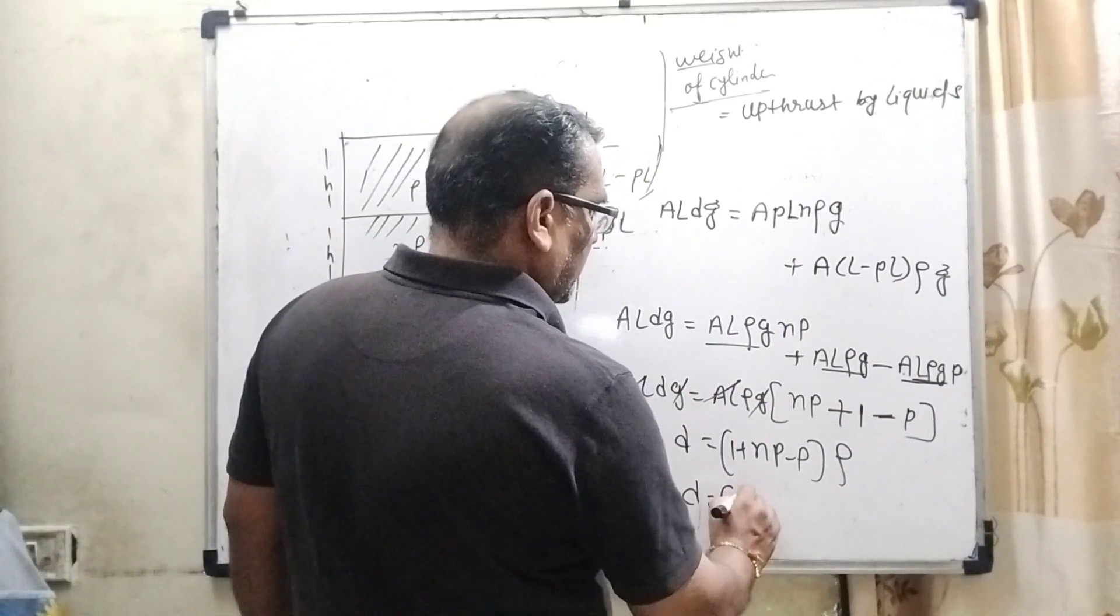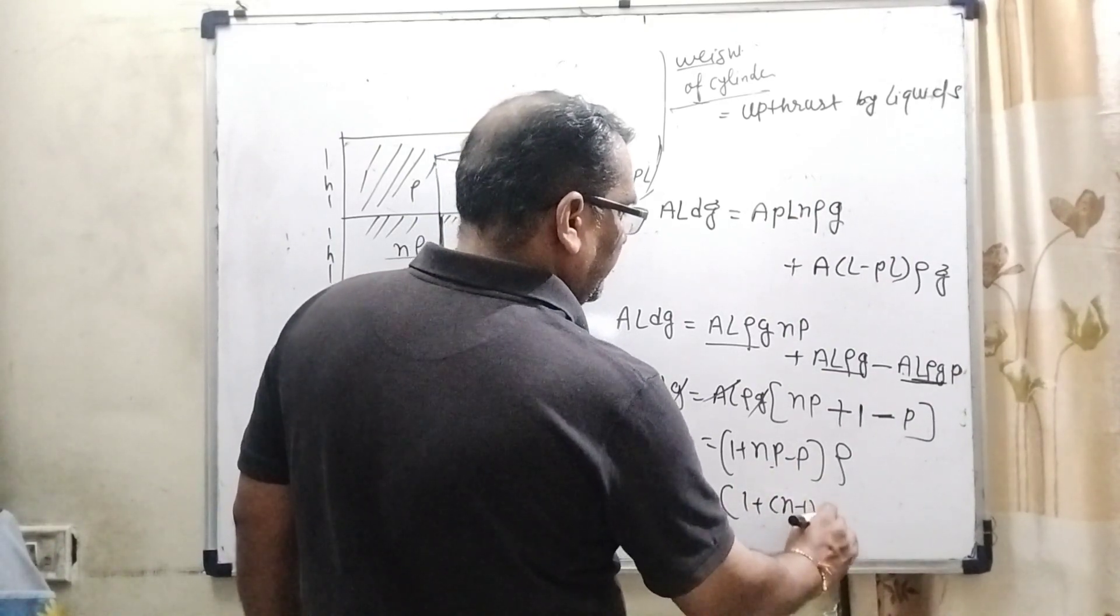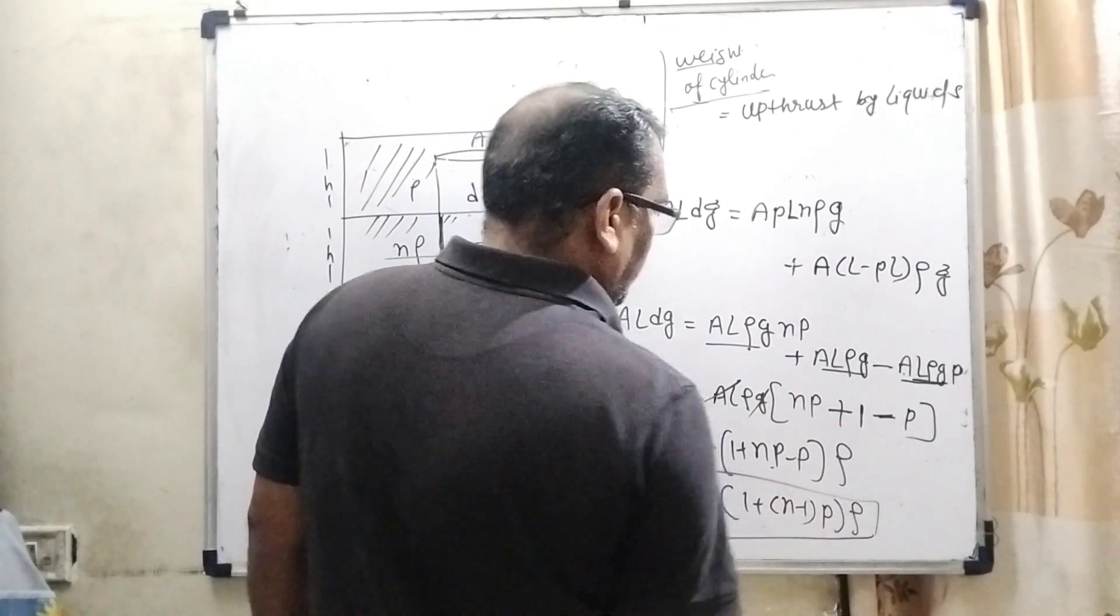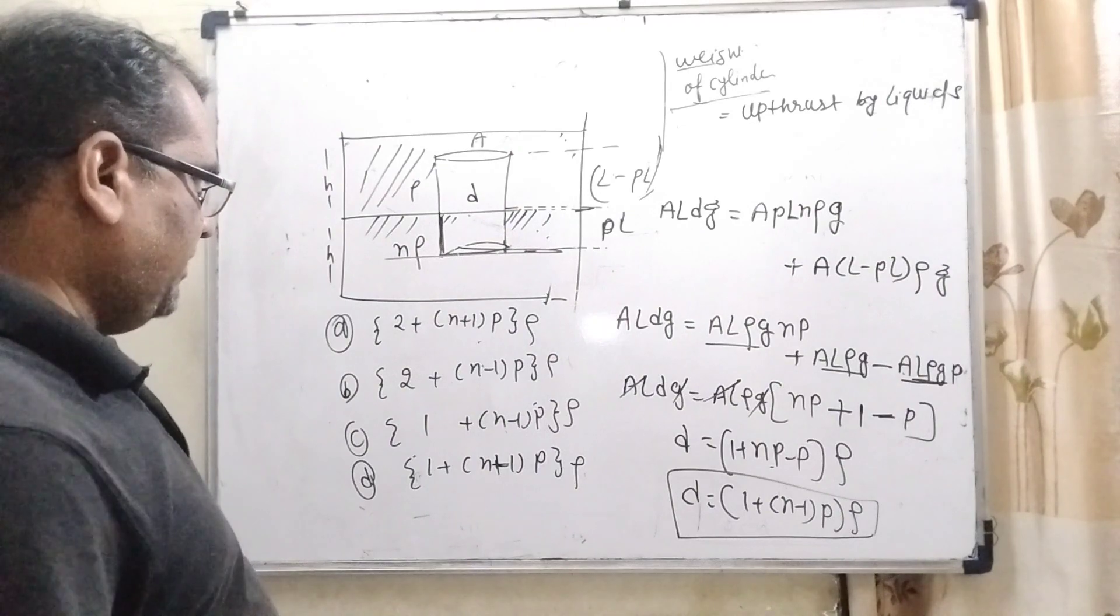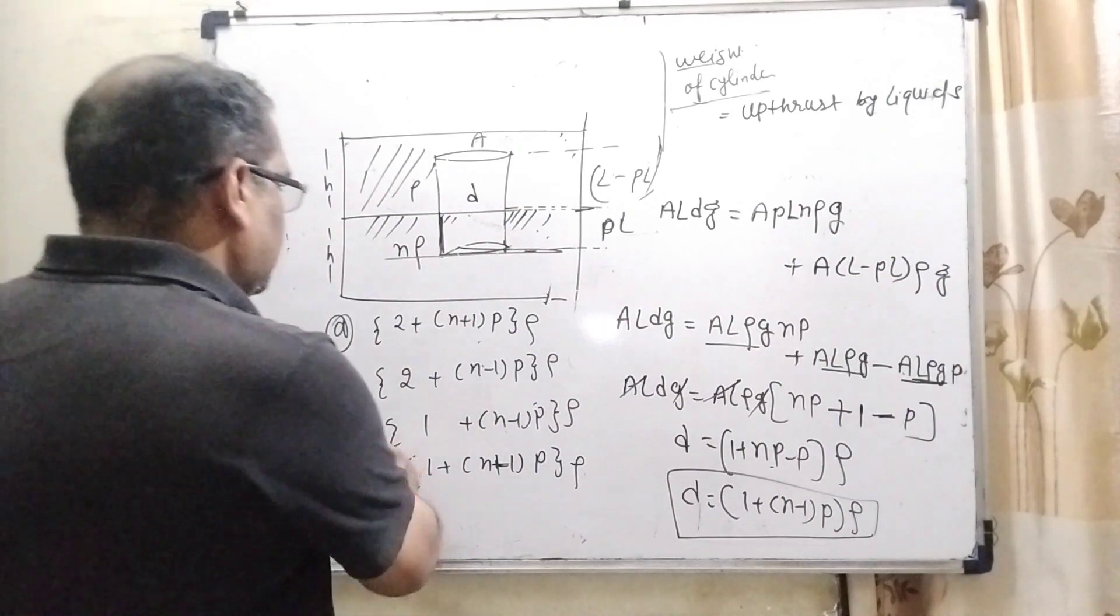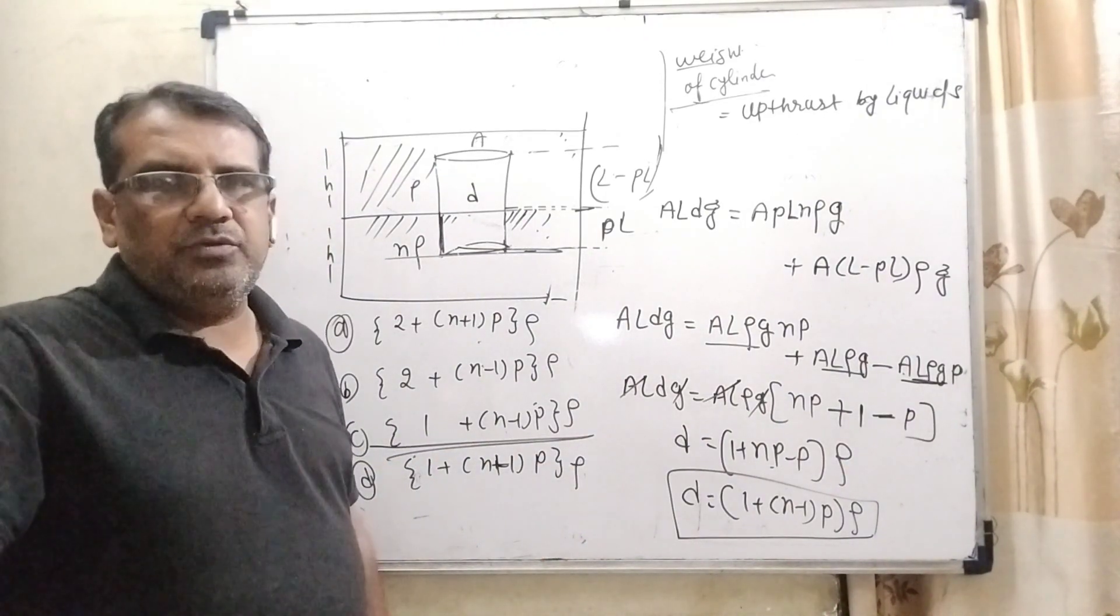So d equals 1 plus p times (n minus 1) times ρ. This is the answer. Now let's see which option matches: 1 plus (n minus 1)p times ρ, that is option C. I hope you understood this question.